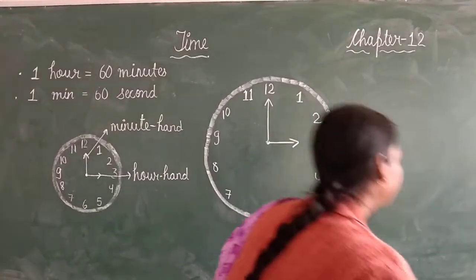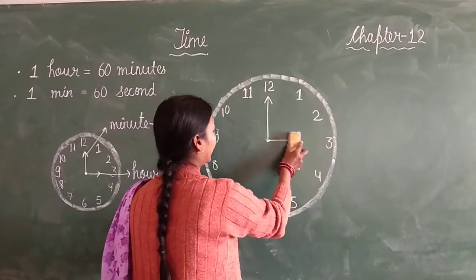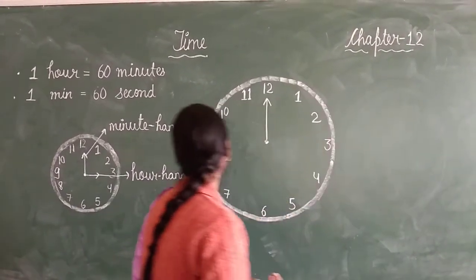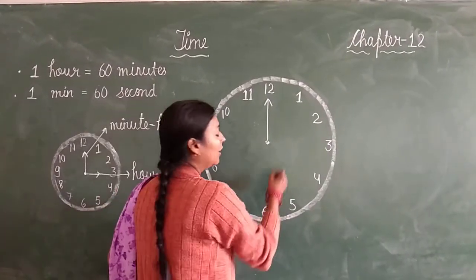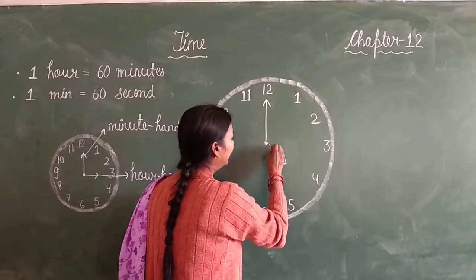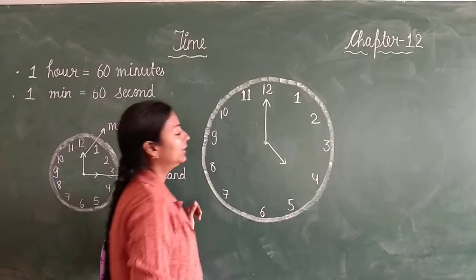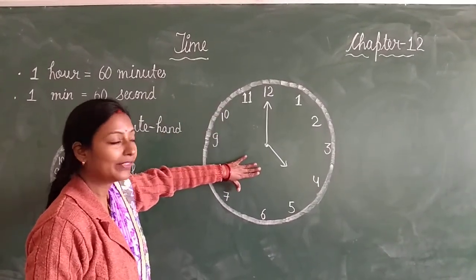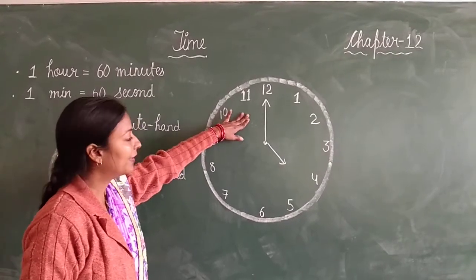Suppose our short hand or hour hand is on 4 and our minute hand is on 12. What is the time? This is 4 o'clock.